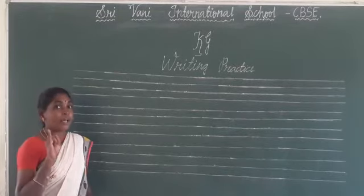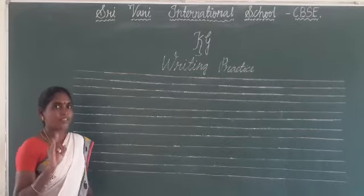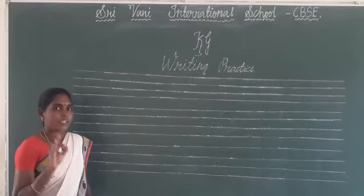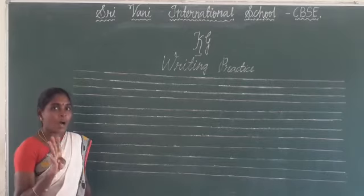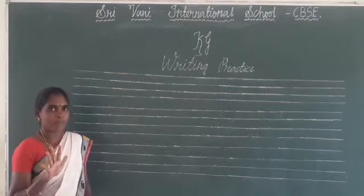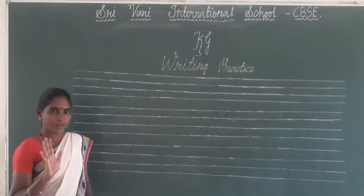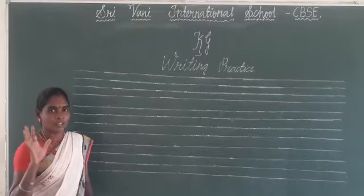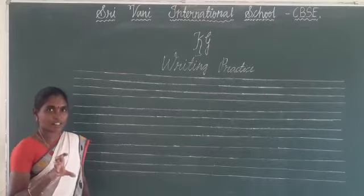What are the sounds of these short vowels? The sound of A is the short 'a' sound, the sound of E is the short 'e' sound, the sound of I is the short 'i' sound, the sound of O is the short 'o' sound, and the sound of U is the short 'u' sound. So now we are going to write all those sound-producing words.